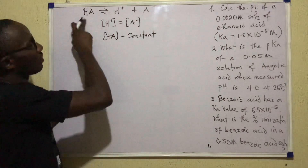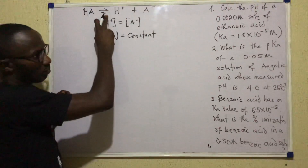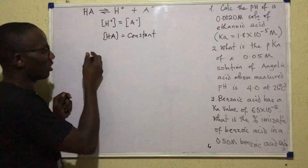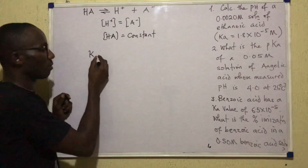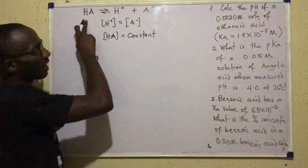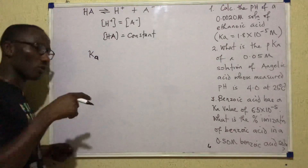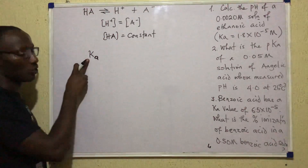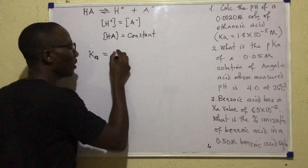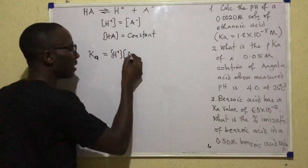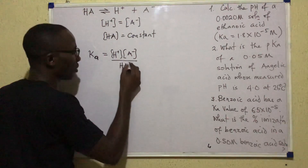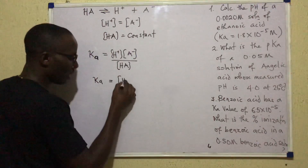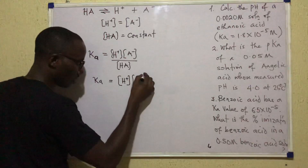Based on that, for this reversible reaction, we can write an equilibrium constant expression — a mass action expression. In this case, I'll write Ka, the acid dissociation constant, because an acid is dissociating. By first principles, Ka equals H+ concentration times A- concentration, all over HA concentration.